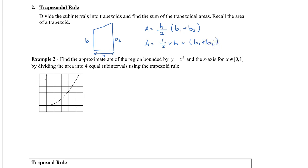Let's find the area under the curve y equals x squared from 0 to 1, dividing it into four subintervals again. This time we're drawing trapezoids — here's the first one, which is actually a triangle, then another trapezoid, another one, and our last one. The width of each trapezoid is one-quarter, and that will also be our height, so we have one-half times one-quarter.